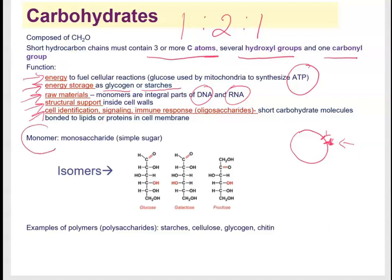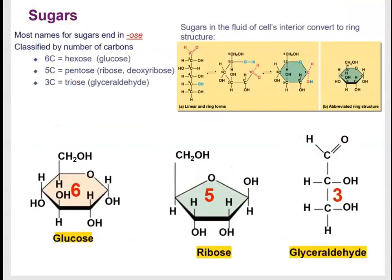The simple form of sugar is a monosaccharide; these are isomers — same molecular formula, different structural arrangements. Examples of polysaccharides include starches, cellulose, glycogen, and chitin. Monosaccharides vary in the number of carbons they contain, with a minimum of three. Sugars with six carbons are called hexoses — for example, glucose — and those with five carbons are called pentoses — for example, ribose and deoxyribose.